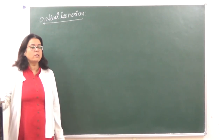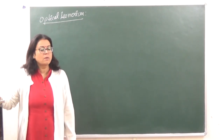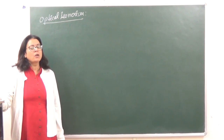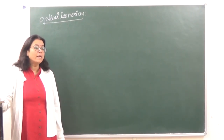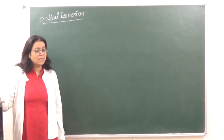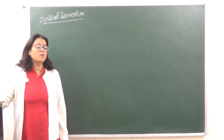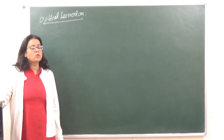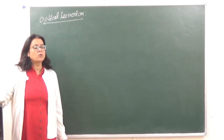We also covered stereo isomerism, specifically geometrical isomerism. Building on that, the second type of isomerism we are going to discuss today is known as optical isomerism.